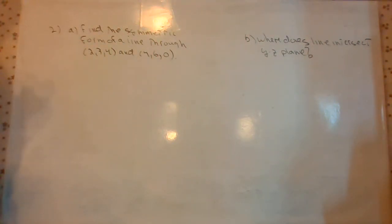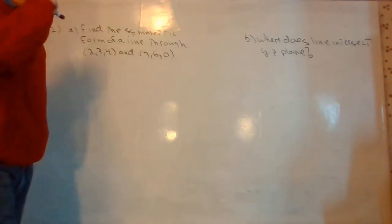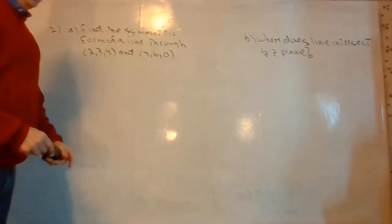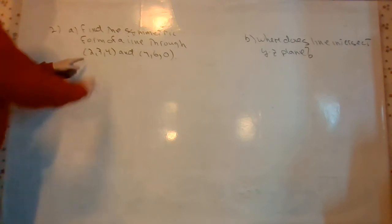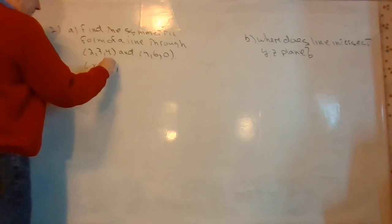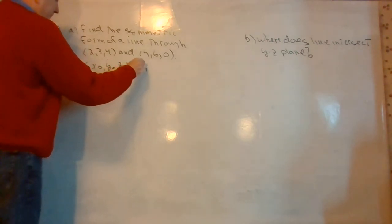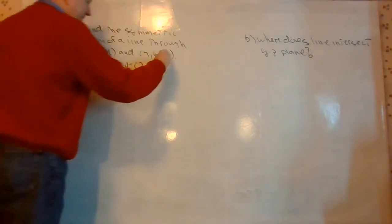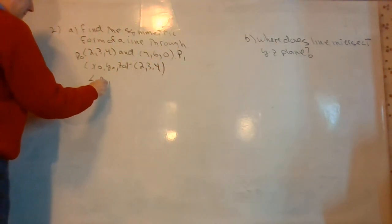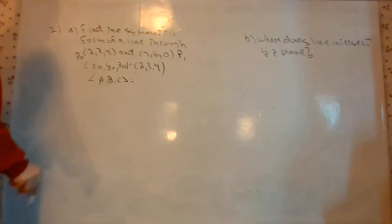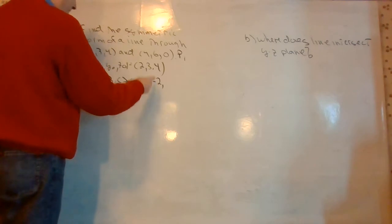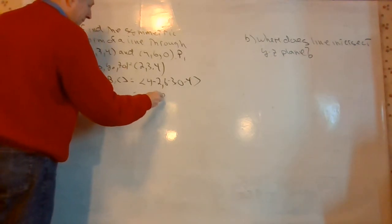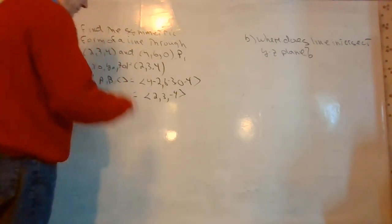Part A: find the symmetric form of a line through 2, 3, 4 and 4, 6, 0. And Part B: where does the line intersect the YZ plane, if at all? We'll pick 2, 3, 4 as our starting point P0 and 4, 6, 0 as P1. The direction vector ABC is: 4 minus 2, 6 minus 3, 0 minus 4, which gives 2, 3, negative 4.